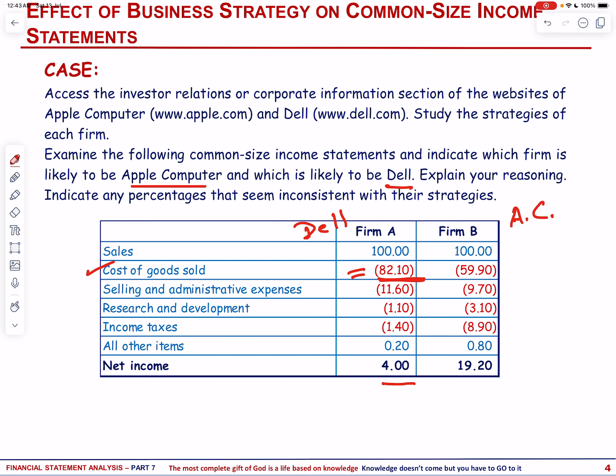Apple is known for its unique and innovative products such as iPhones, iPads, and Mac computers, which integrate hardware, software, and design elements. Apple invests heavily in research and development to create proprietary technologies and designs that differentiate its products in the marketplace. Due to the uniqueness of its products and the brand loyalty it has cultivated, Apple can command higher prices and achieve higher profit margins on each unit sold. As a result, Apple's cost of goods sold as a percentage of sales is typically lower than companies like Dell, because of the added value through innovation.